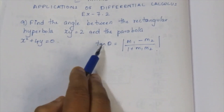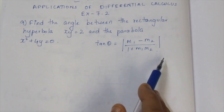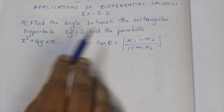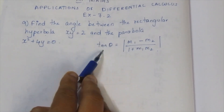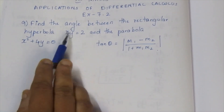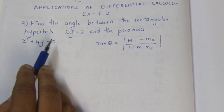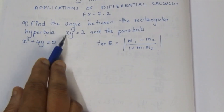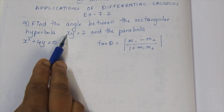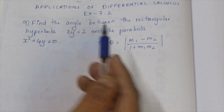We can find theta as tan inverse of that expression. So we need to find the slopes m1 and m2, which we get by computing dy/dx for each curve.